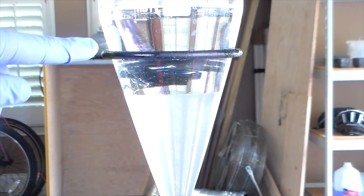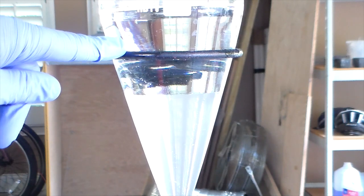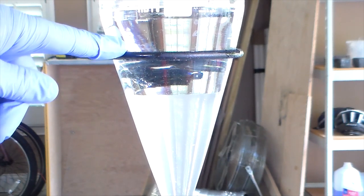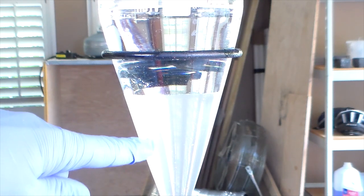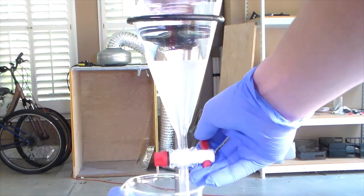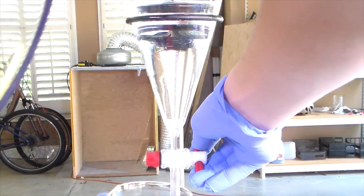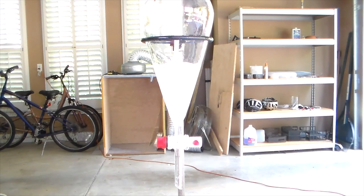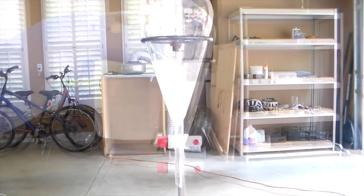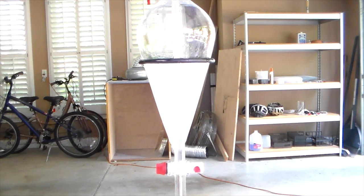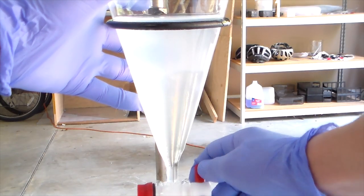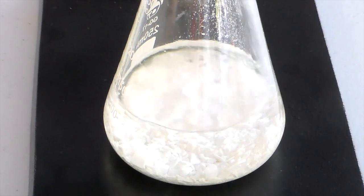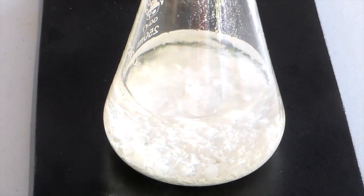After settling, the top layer contains water as well as all of the reaction byproducts and excess sodium hypochlorite. The lower layer contains our chloroform product. The lower chloroform layer was drained off and the upper water layer was discarded. The lower chloroform layer was then added back into the separatory funnel and dried using a saturated solution of sodium chloride. The layers were mixed well and then allowed to settle. The lower chloroform layer was drained into a flask containing calcium chloride, which serves to further dry the chloroform.